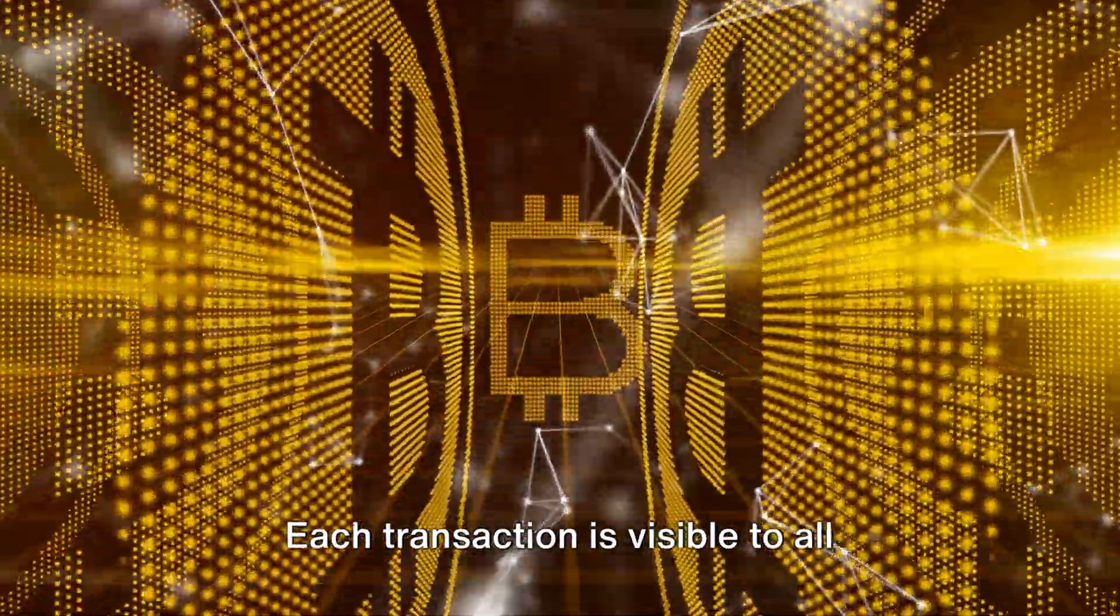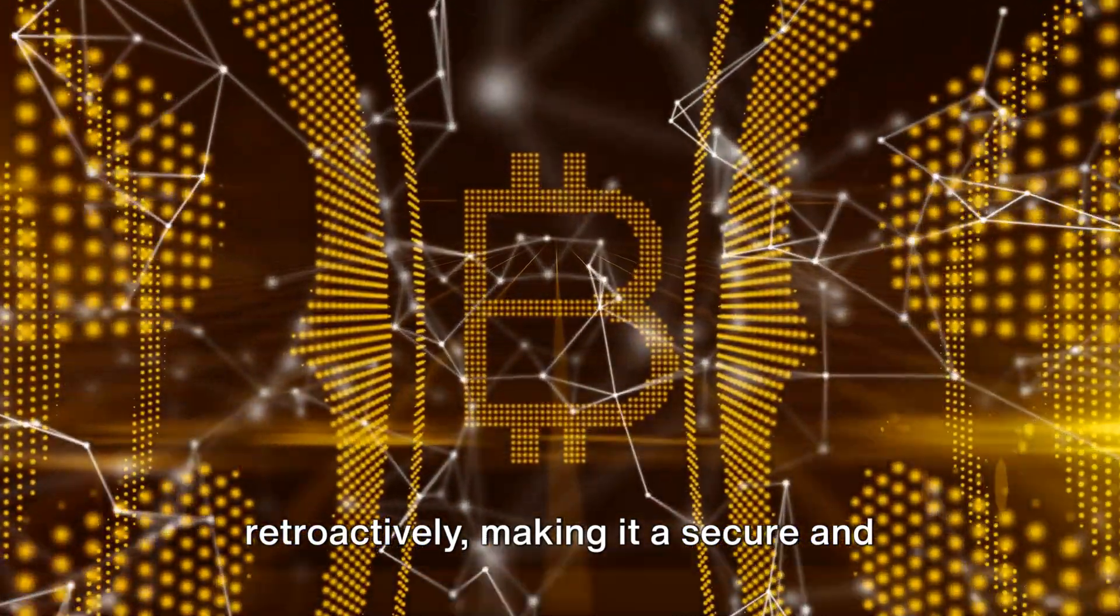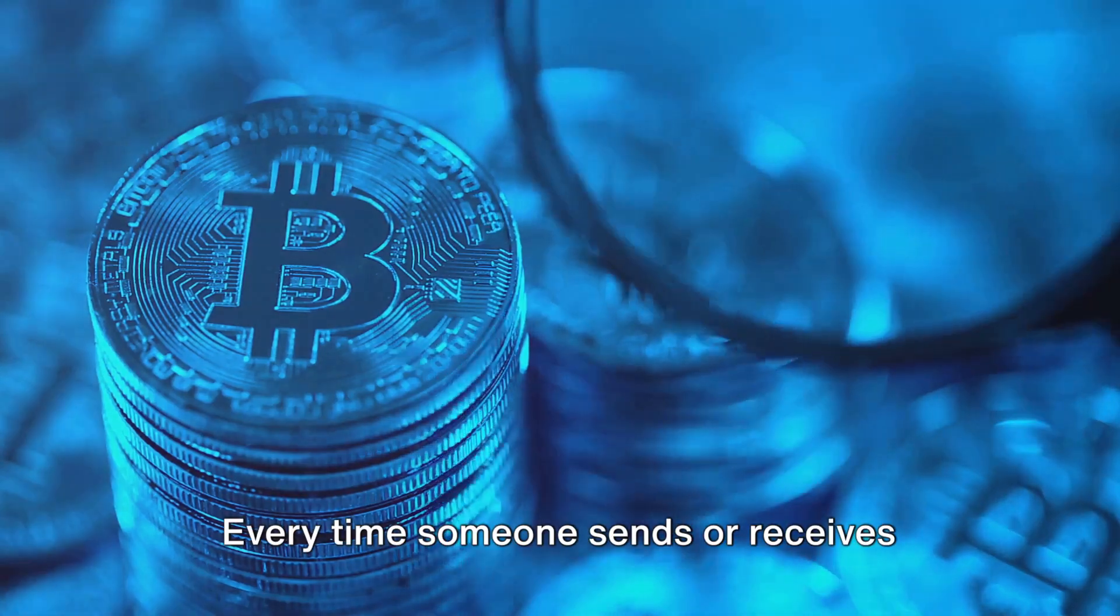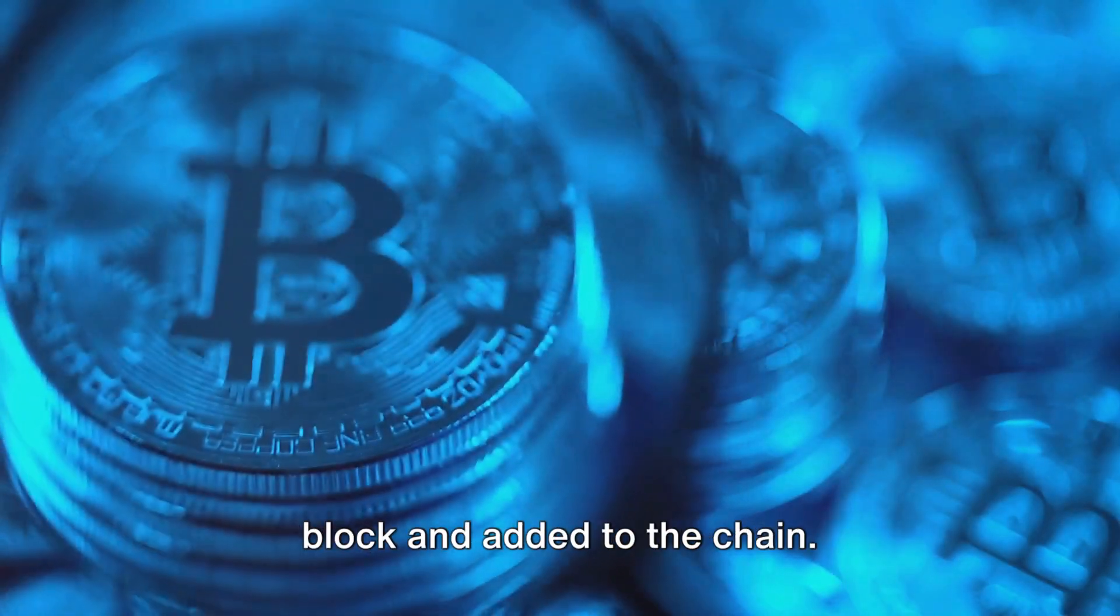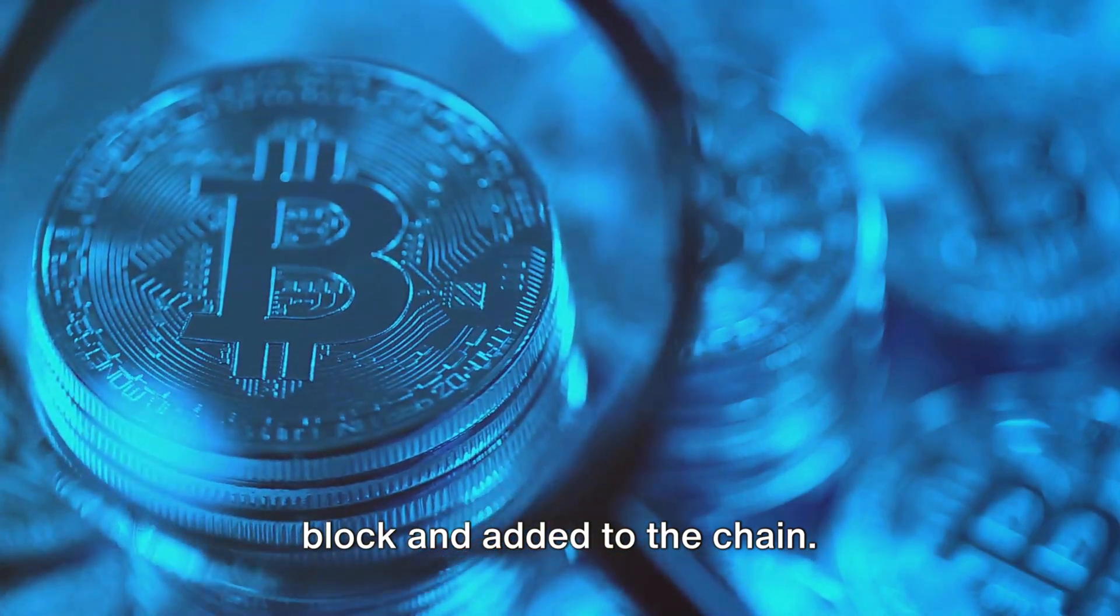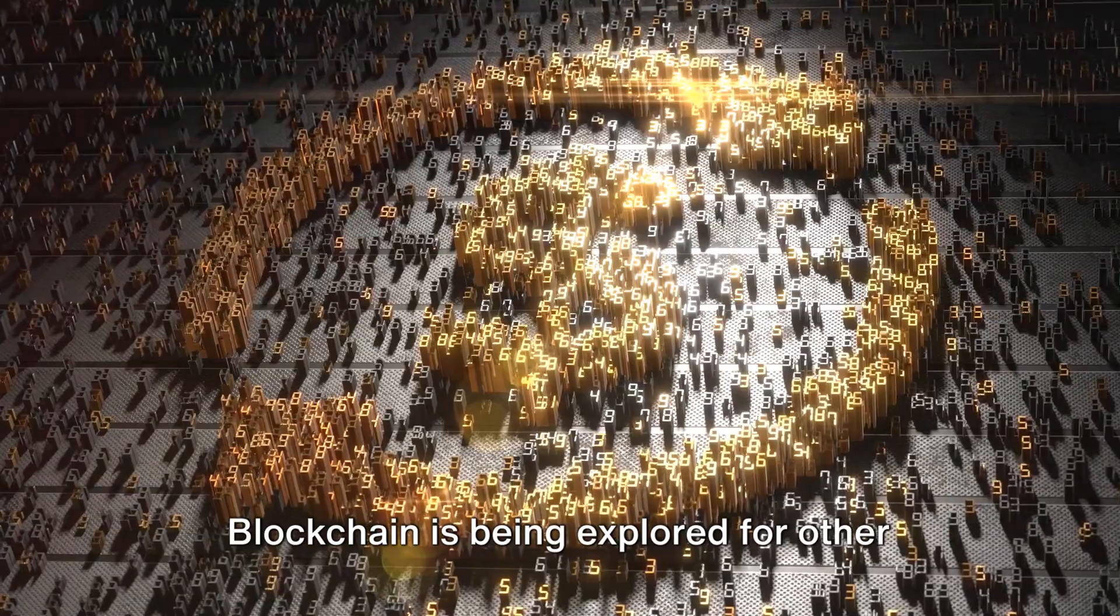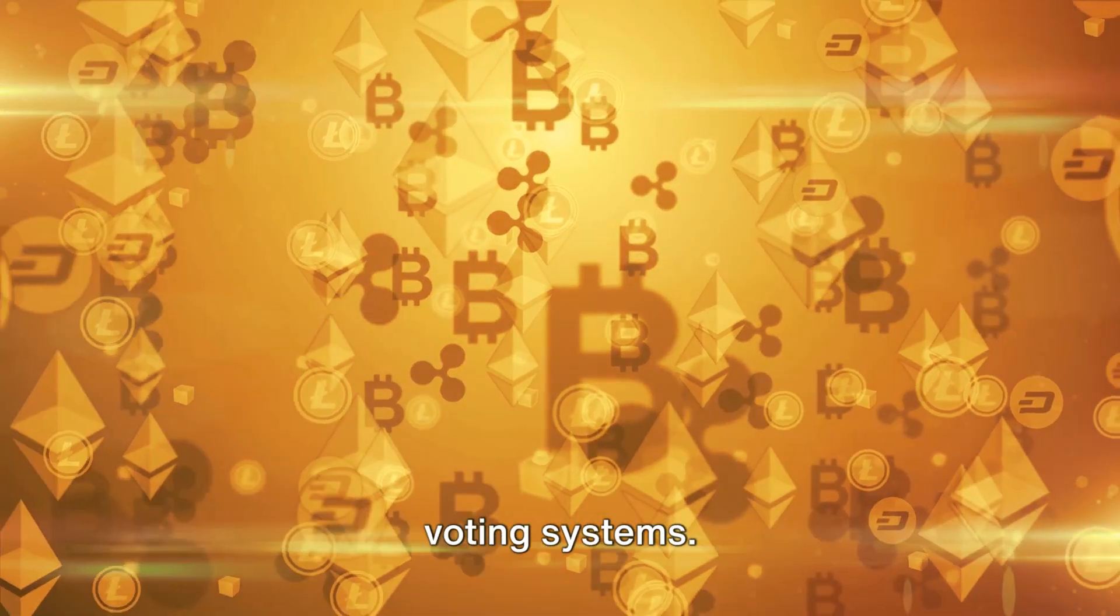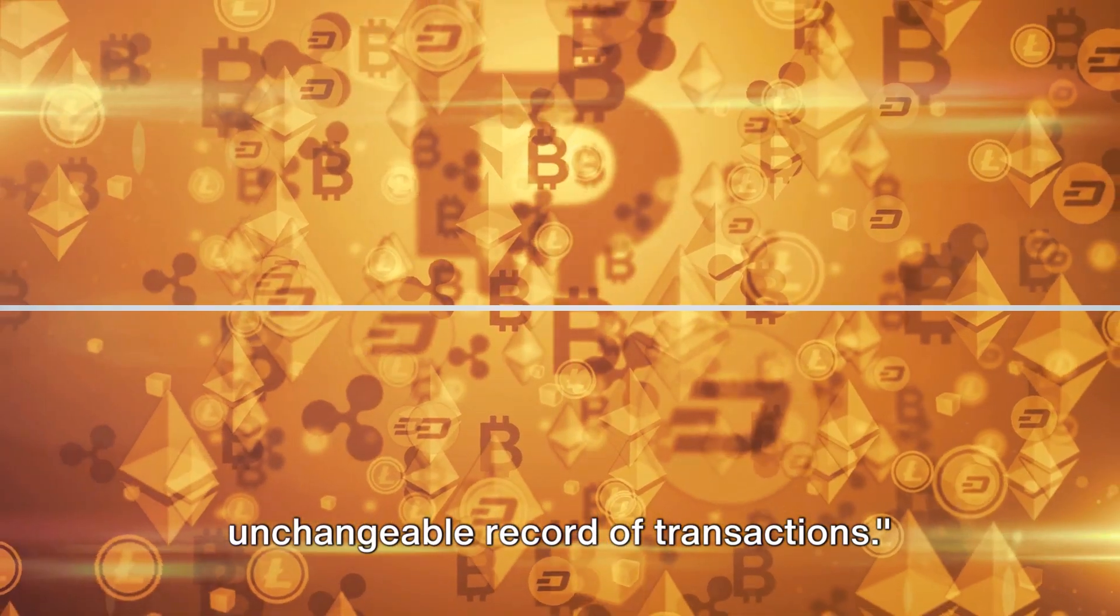The real beauty of blockchain is its transparency and security. Each transaction is visible to all participants and can't be altered retroactively, making it a secure and trustworthy system. This technology powers cryptocurrencies like Bitcoin. Every time someone sends or receives Bitcoin, the transaction is recorded in a block and added to the chain. But don't let the crypto talk limit your understanding. Blockchain is being explored for other uses too, from supply chain management to voting systems.